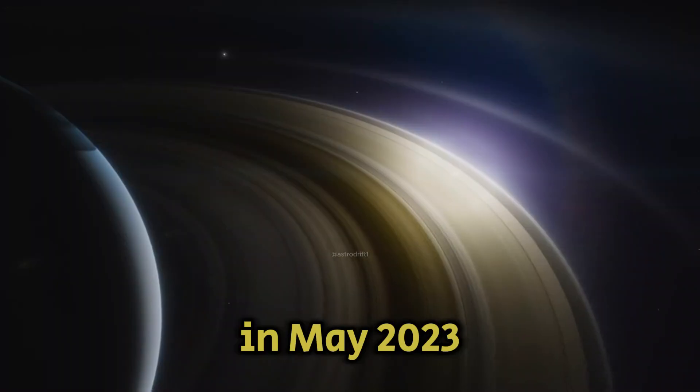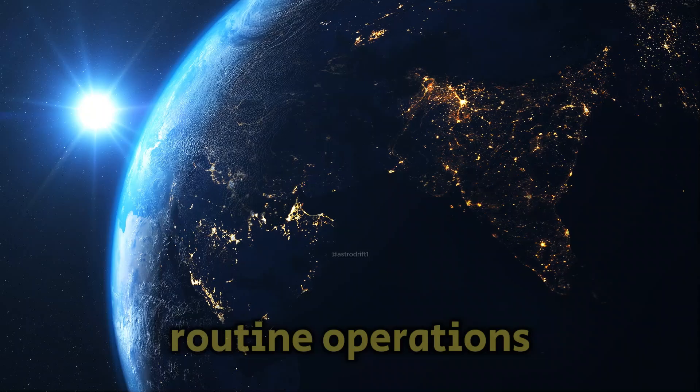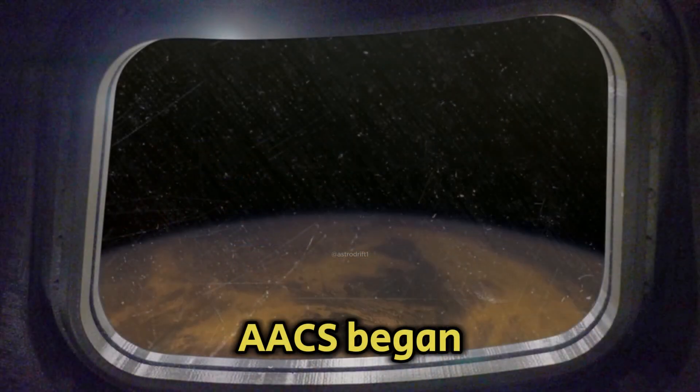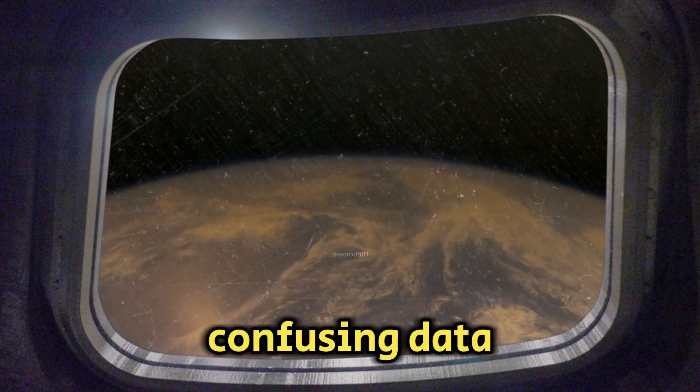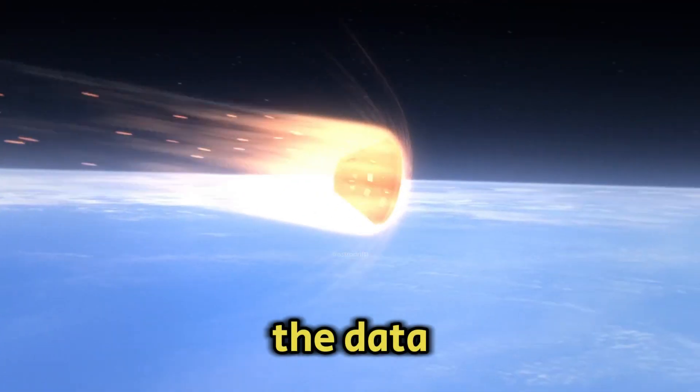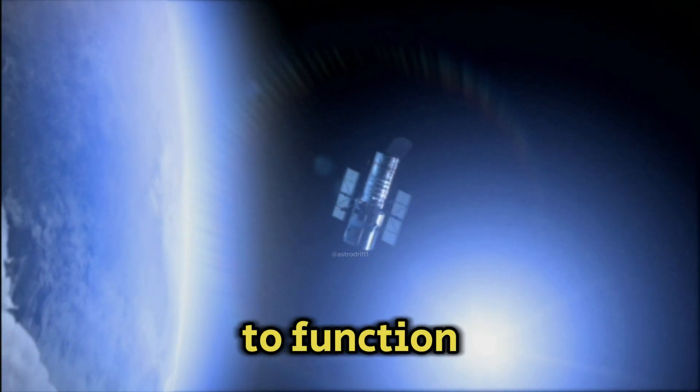In May 2023, Voyager 1 encountered an unusual event during its routine operations. The Attitude Articulation and Control System, AACS, began sending back confusing data instead of the usual updates on the spacecraft's health and status. The data appeared random and incoherent, yet Voyager 1 continued to function normally.